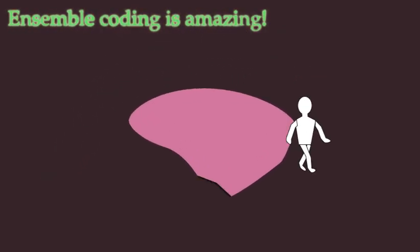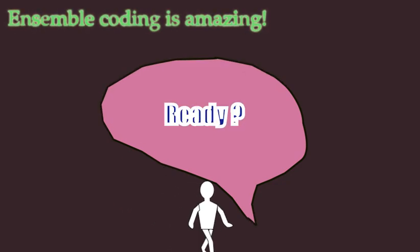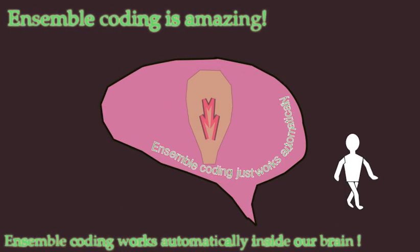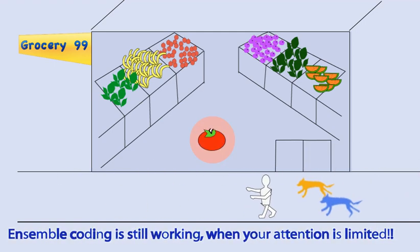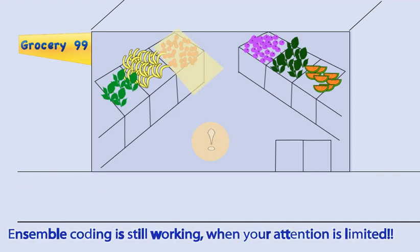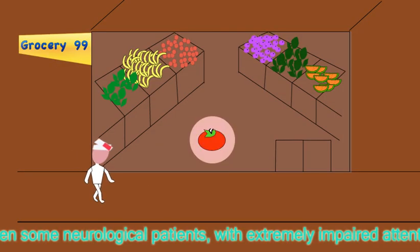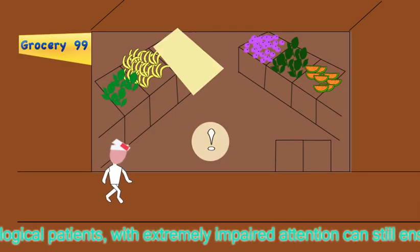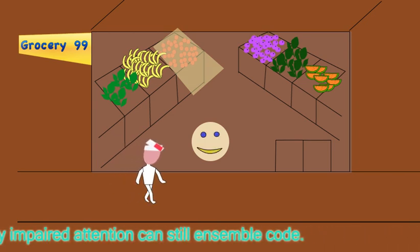Here is the amazing part of ensemble coding — it appears to work automatically. When Sam was distracted by a group of mischievous dogs on the street, Sam can still determine if the store is selling tomatoes, even though his attention is clearly limited. Even some neurological patients with extremely impaired attention can still ensemble code. Isn't that amazing?